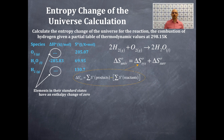To get delta S-naught for the system — which we've done for other reactions in previous videos — the equation is: delta S-naught system equals the sum of the S-naught values of the products minus the sum of the S-naught values of the reactants. Let's plug that in.